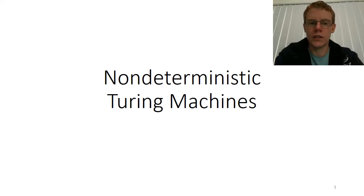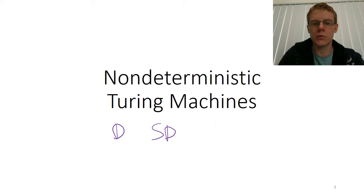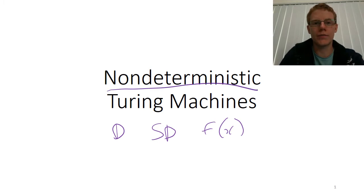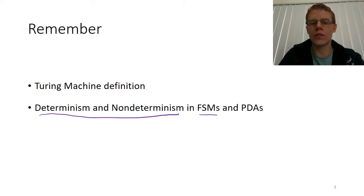In this video and the next video we're going to discuss non-determinism in Turing machines. We're going to discuss the exact definitions for deciding Turing machines, semi-deciding Turing machines, and Turing machines that compute functions. We're also going to discuss whether or not non-determinism adds power. What you need to remember for this video is the definition of a Turing machine and how determinism and non-determinism played out with finite state machines and push down automata.